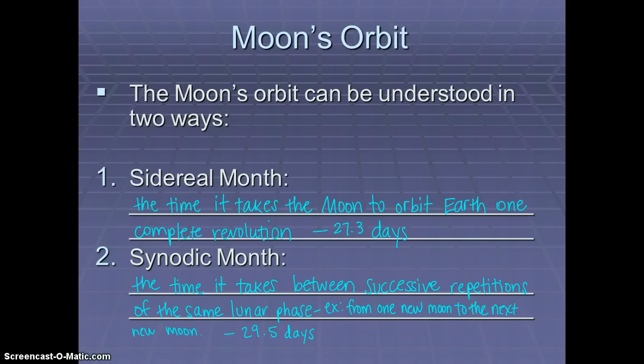Another way to think about the Moon's orbit is the time it takes between successive repetitions of the same lunar phase—for example, from one New Moon to the next New Moon. This is called a synodic month because it's not exactly the same length as the sidereal month. The synodic month takes 29.5 days.